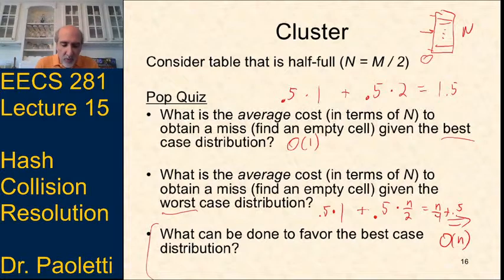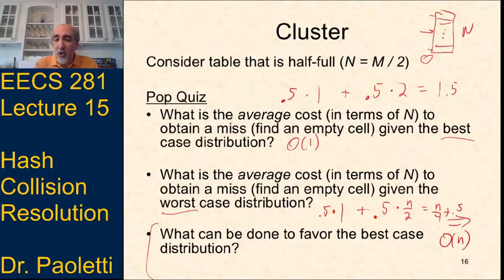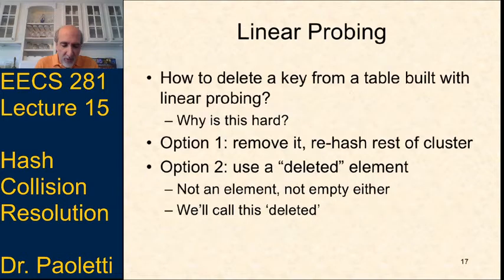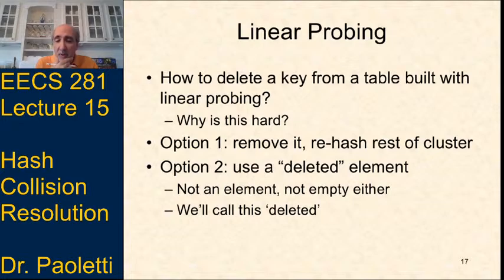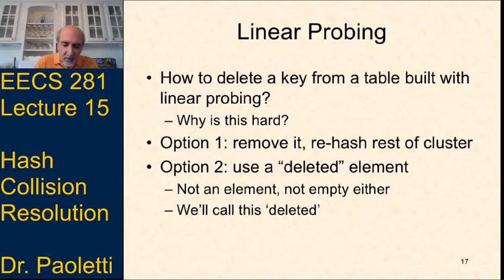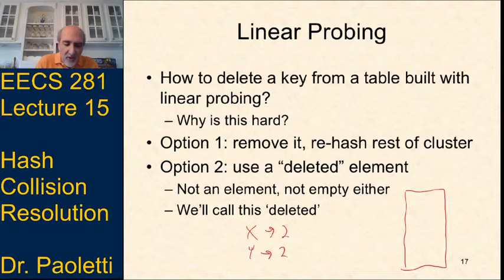Now let's look at what happens when we delete something from the hash table with linear probing. Suppose x hashes to index 2, y also hashes to index 2 and gets bumped to index 3, and z hashes to index 3 and gets bumped to index 4. If we remove x, index 2 appears empty. But when we search for y, the hash sends us to index 2. Seeing an empty location would incorrectly tell us y is not there — but y may have been bumped.